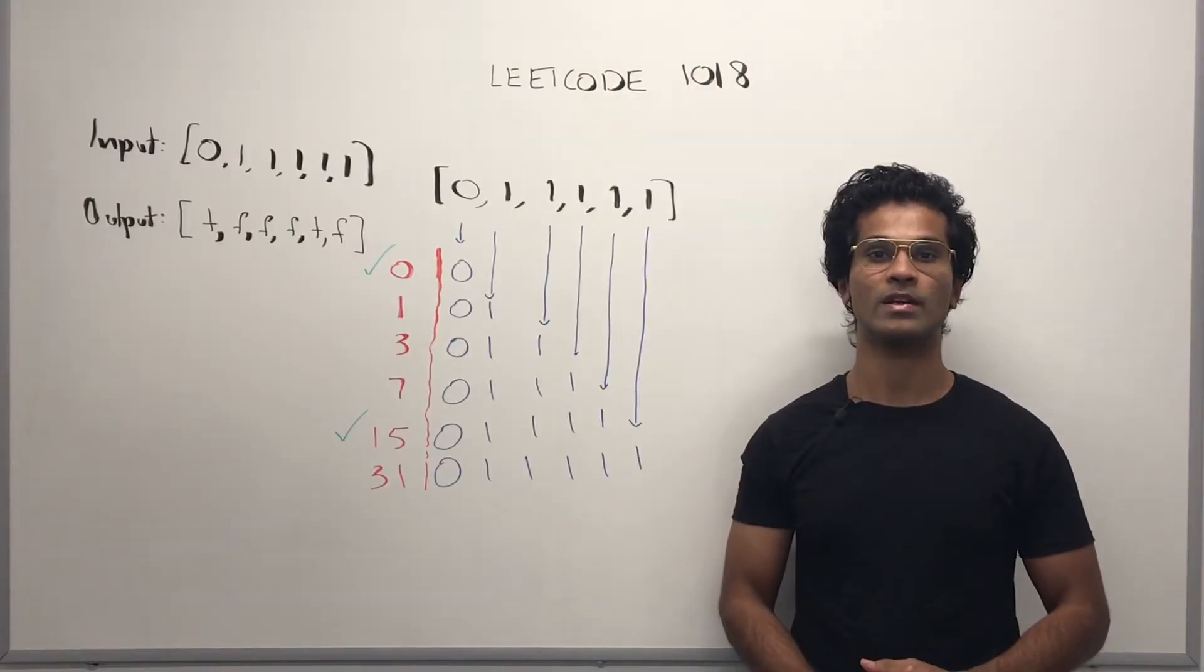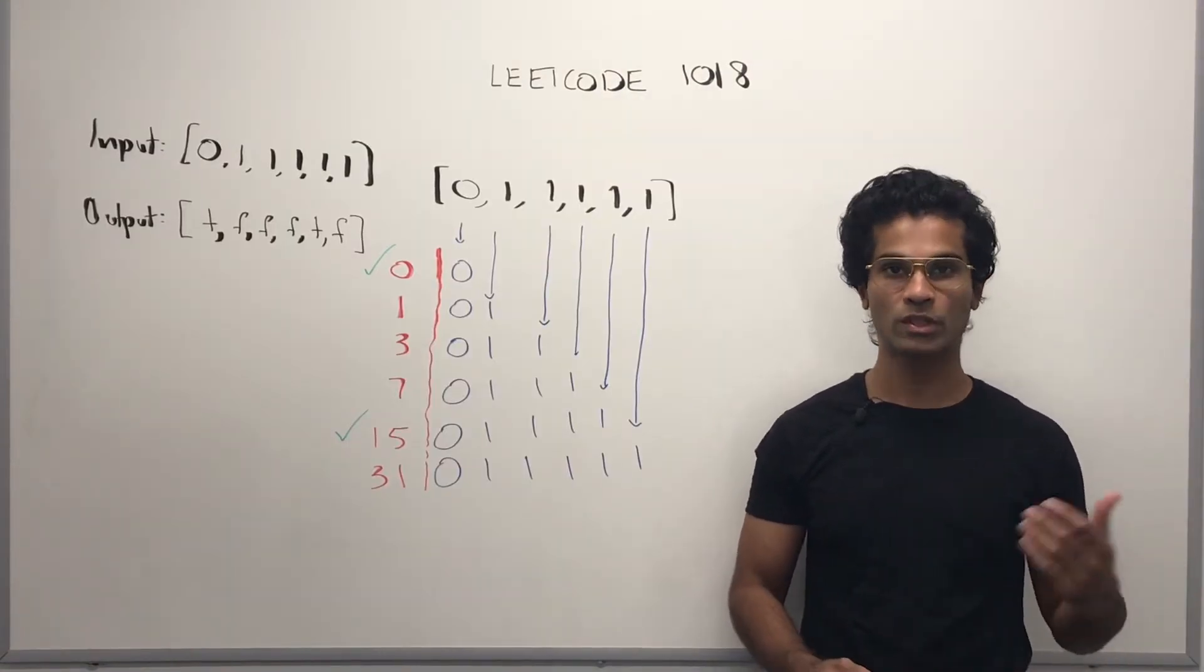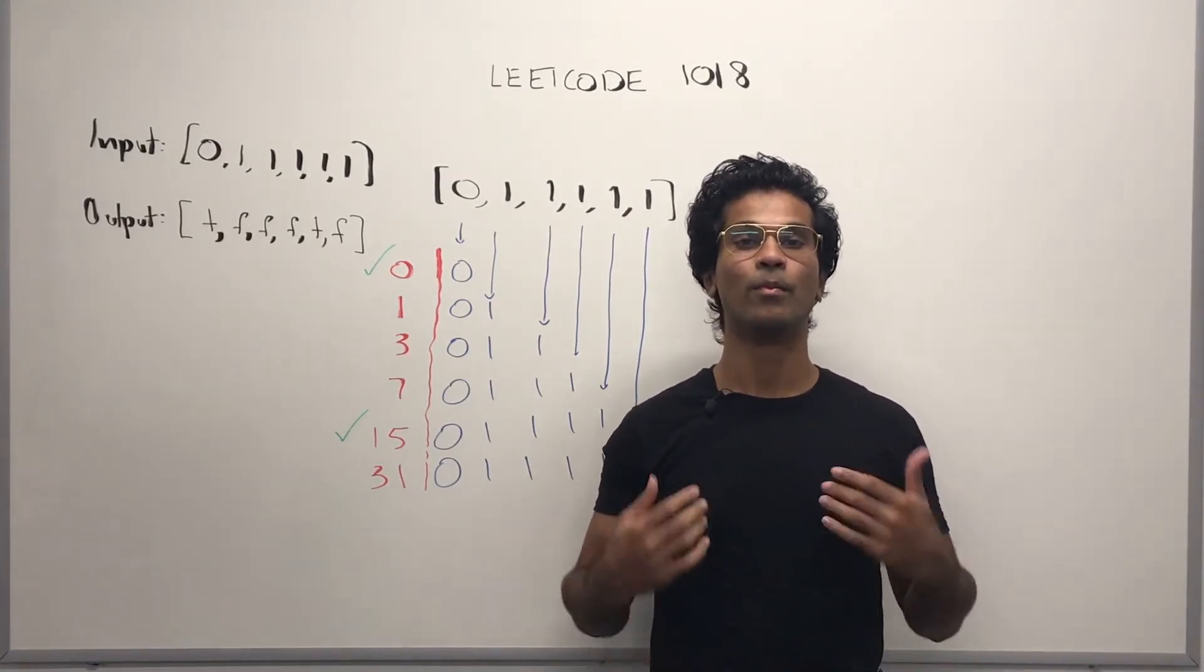The input array is going to be an array of integers with only zeros and ones, and the output is going to be a boolean array.